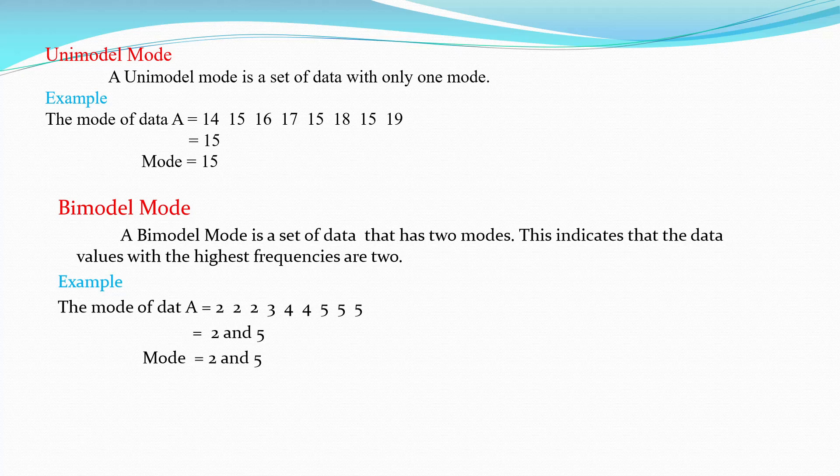A unimodal mode is a set of data with only one mode. Example: the mode of data A = {14, 15, 16, 17, 15, 18, 15, 19}. The repeated value is 15, so the mode is 15.